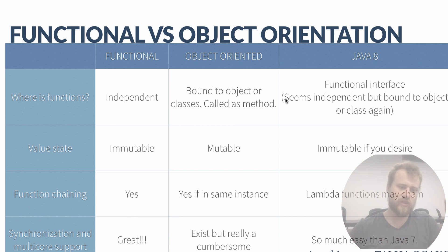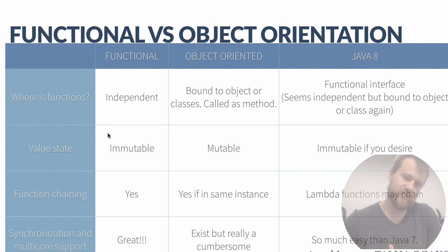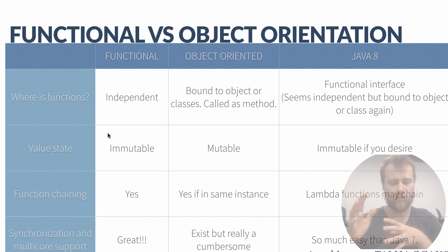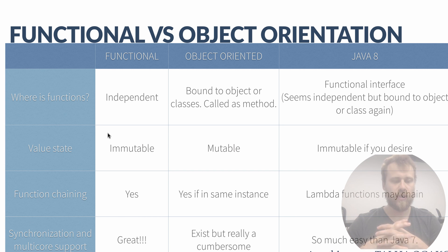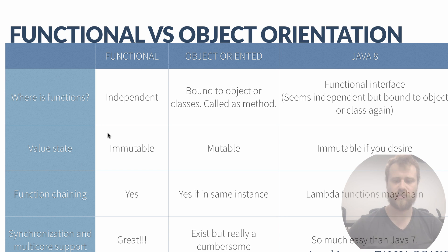The fourth item is synchronization and multicore support. It is great in functional programming because it applies all the functional programming elements. In object-oriented programming, it is possible to synchronize and leverage multicore, but it is really cumbersome because of mutability. In Java 8, it is so much easier than in Java 7.